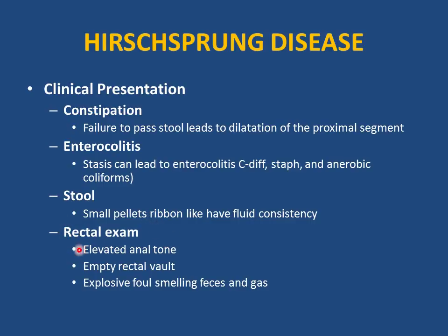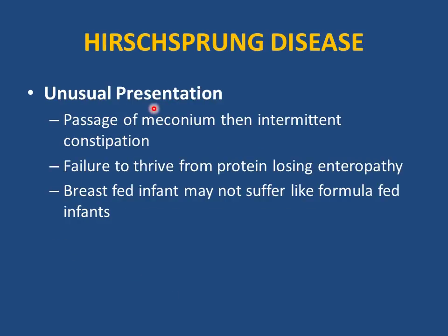Atypical presentation: if the newborn passes meconium in the first 48 hours then presents later with recurrent constipation, this may be misleading. Keep Hirschsprung in your differential and check the anal tone. Hirschsprung disease can also be associated with protein-losing enteropathy, presenting with failure to thrive. Breastfed infants may not suffer as much and can be misleading. Digital rectal exam, anal tone assessment, or barium enema will help you not miss this diagnosis.